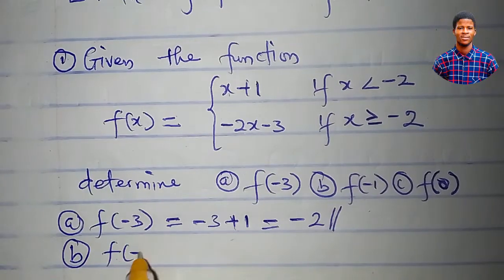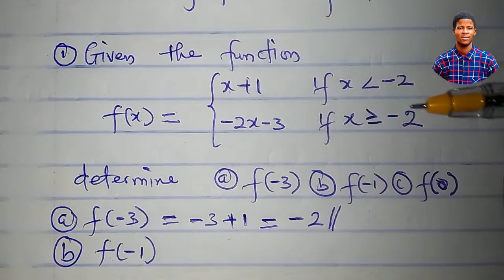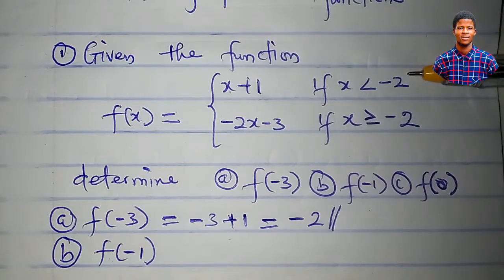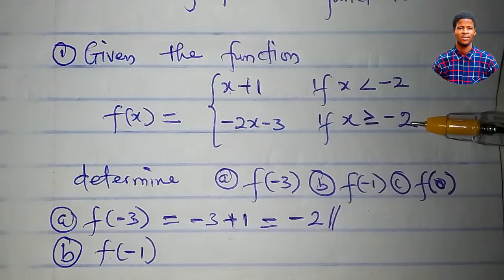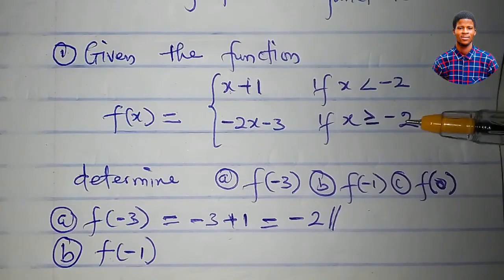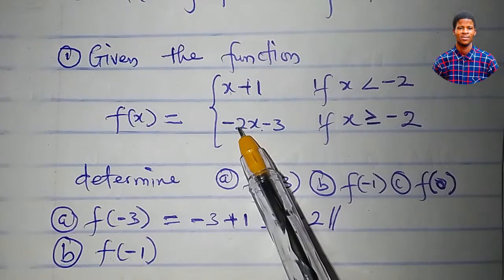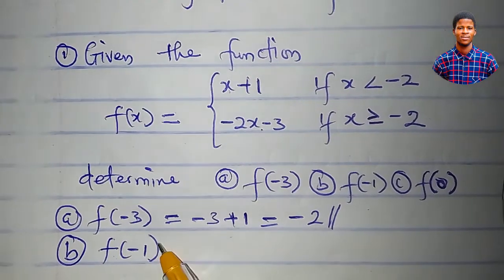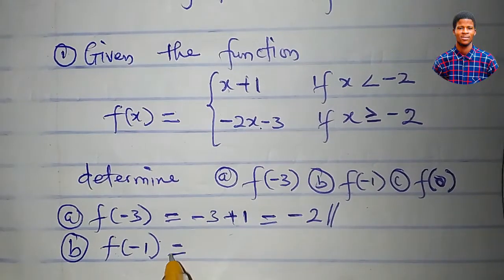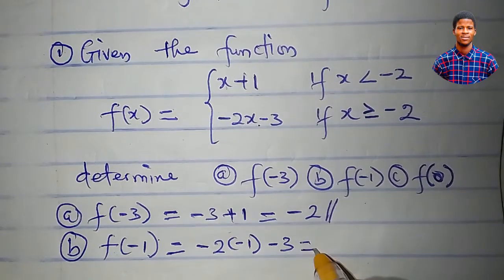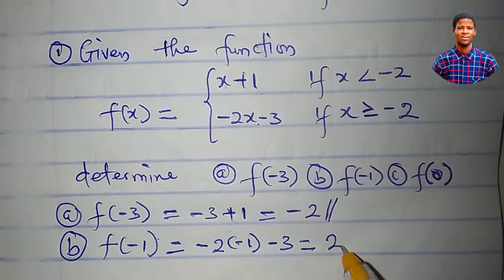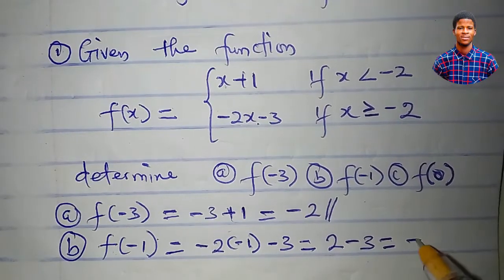Now, what is the value of f(minus 1)? In which of these intervals does minus 1 lie? Minus 1 lies in the interval x greater than or equal to minus 2, because minus 1 is greater than minus 2. This interval includes minus 1, 0, 1, 2, 3, 4, and above. So I will use the sub-function minus 2x minus 3 to evaluate f(minus 1). In place of x I write minus 1: minus 2 times minus 1 gives 2, minus 3 equals minus 1.